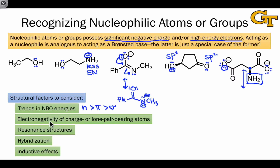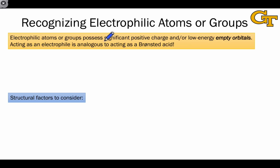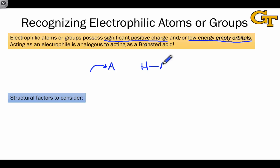Keep in mind that the only difference between acting as a Lewis base and a Brønsted base is the identity of the electrophilic atom that the base is reacting with — all of these nucleophiles are just donating electrons to something. Thinking about them as Brønsted bases is a useful line of thought when determining how they might behave as Lewis bases. Electrophiles possess significant positive charge and/or low-energy empty orbitals — these are really two ways of saying the same thing. Acting as an electrophile is analogous to acting as a Brønsted acid in that an atom is accepting electrons.